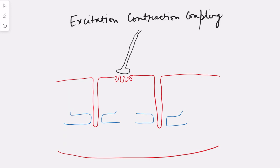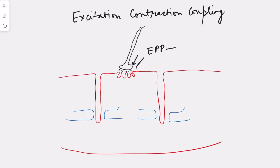When the nerve impulse reaches the nerve terminal, there is release of the neurotransmitter acetylcholine at the neuromuscular junction. This leads to the generation of end plate potential, and when the end plate potential reaches a threshold — which always happens in physiological conditions — there is generation of an action potential.